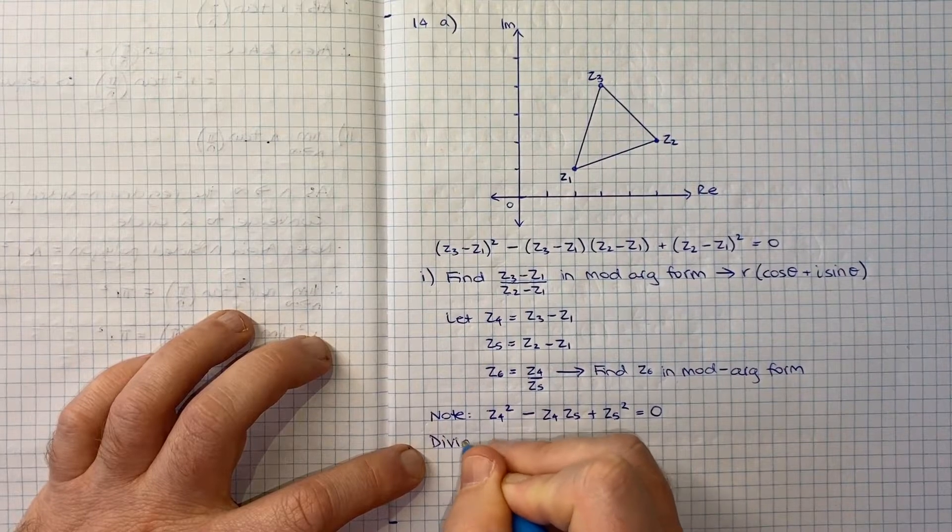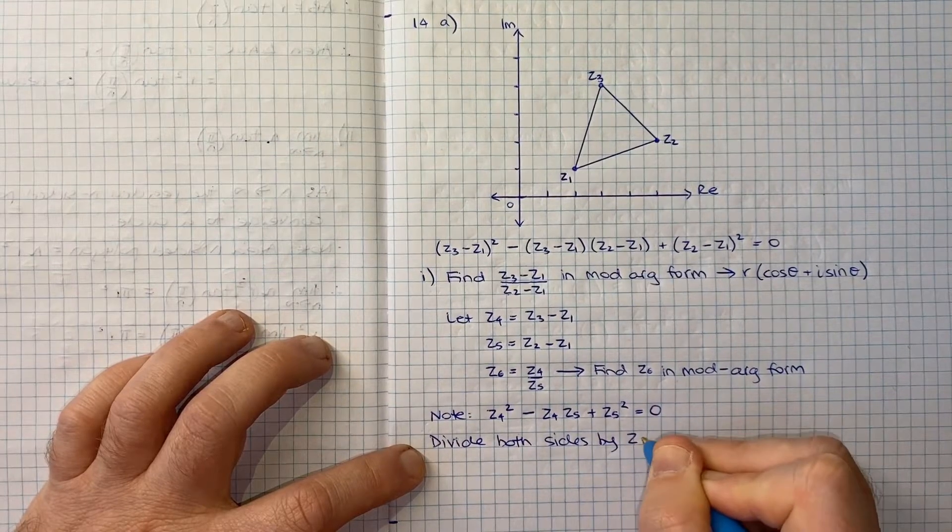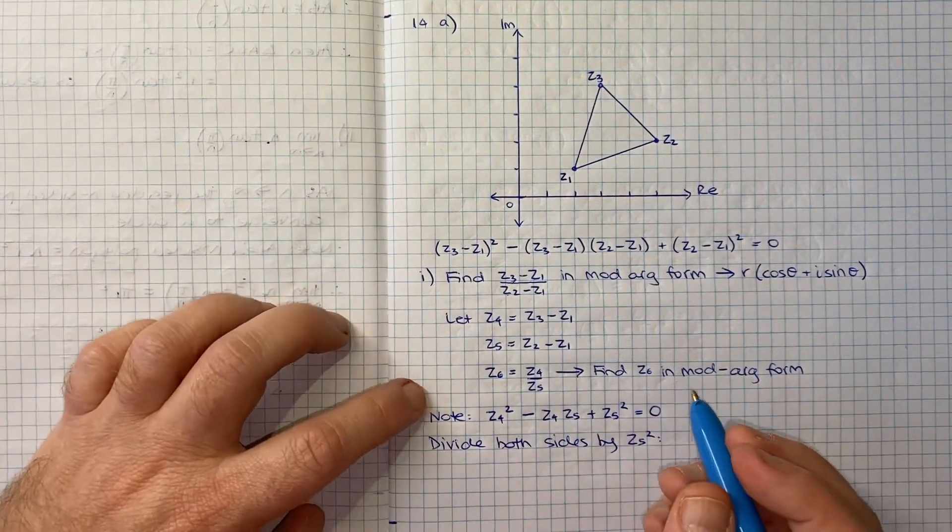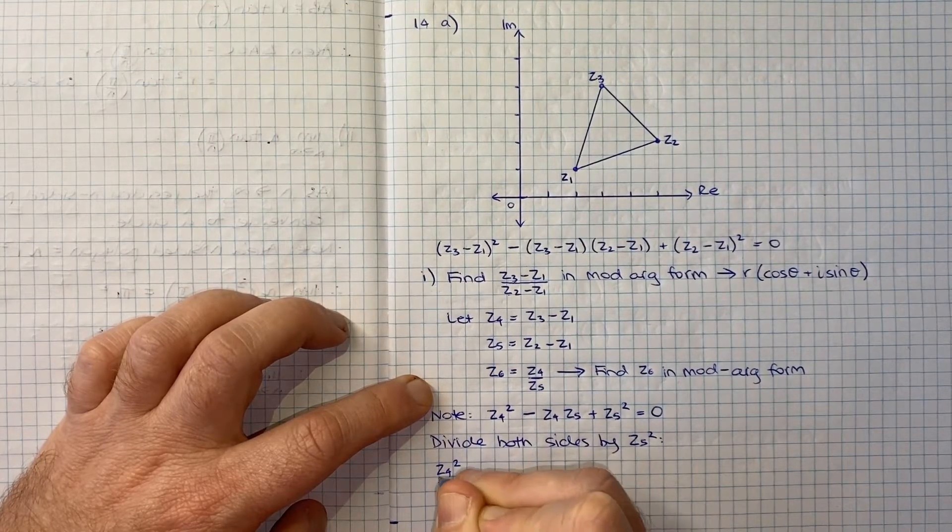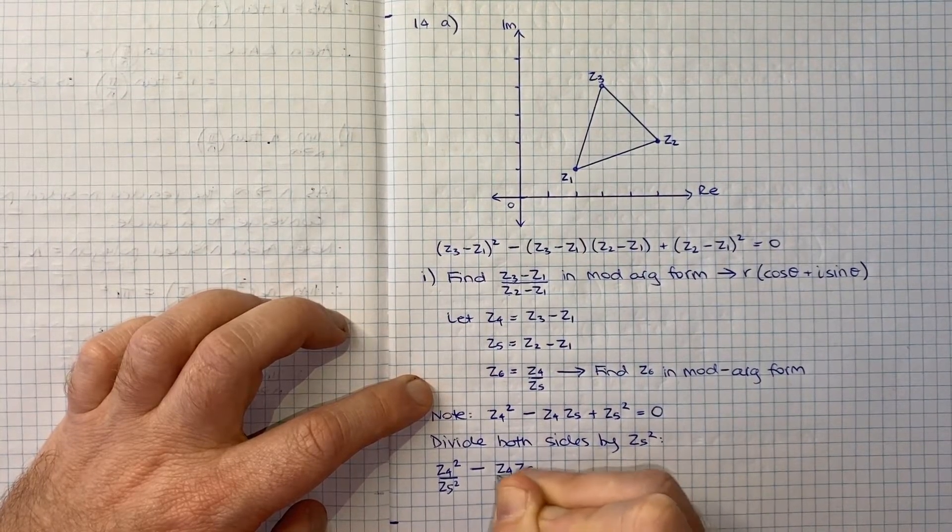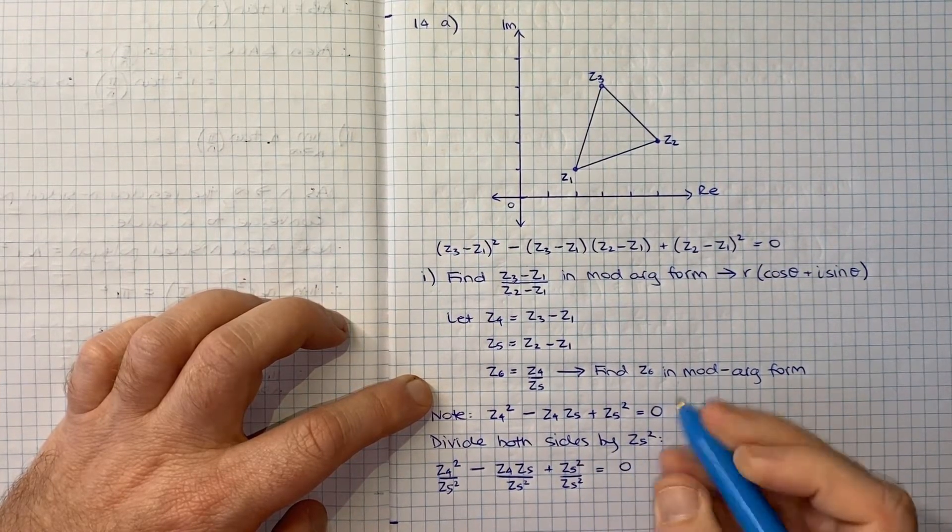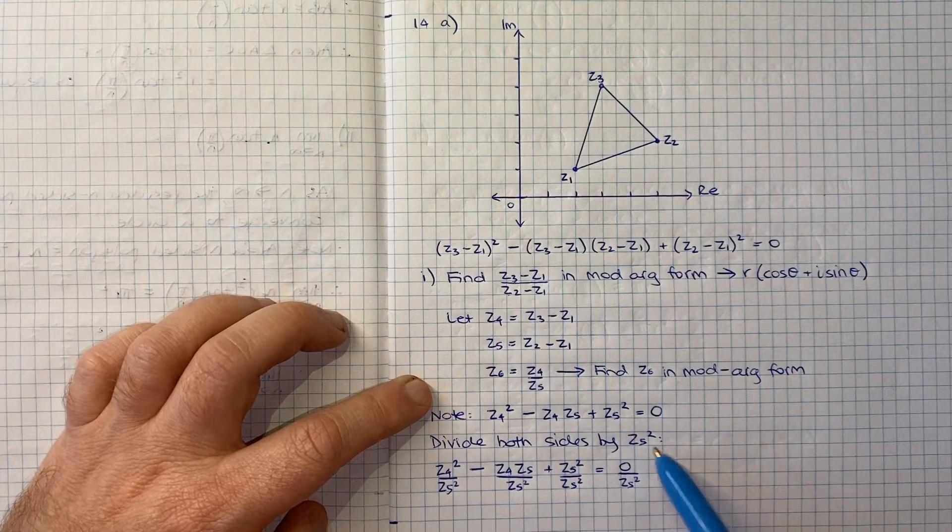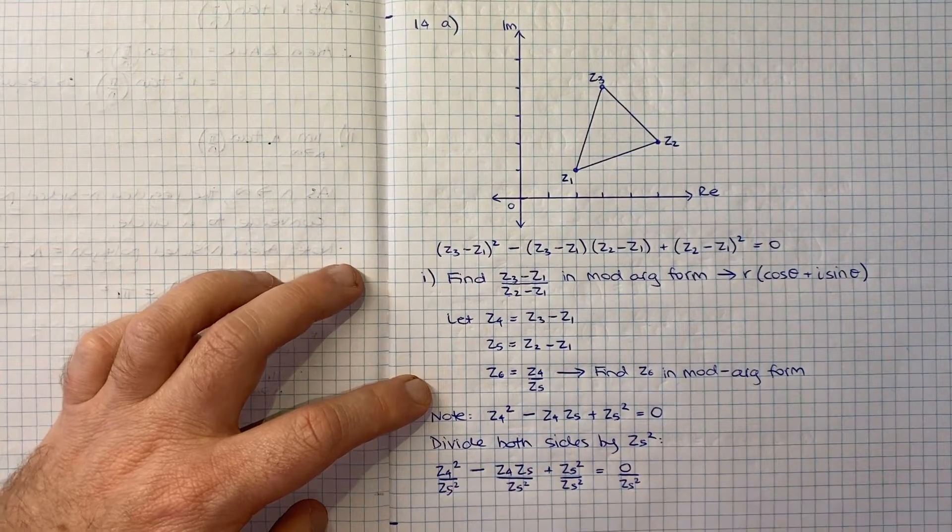Let's divide both sides by Z5 squared. I won't skip any steps here. We're going to get Z4 squared over Z5 squared minus Z4 times Z5 over Z5 squared plus Z5 squared over Z5 squared equals zero over Z5 squared.